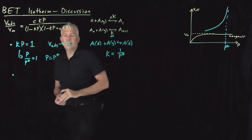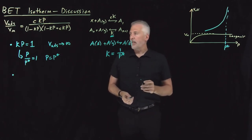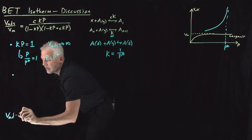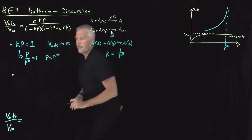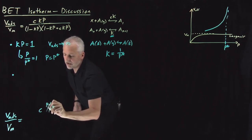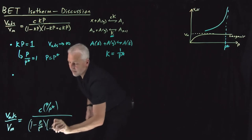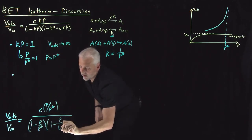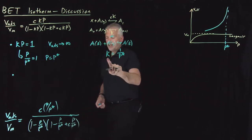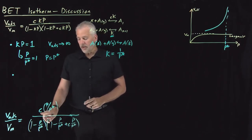We can rewrite this expression in the more conventional form. The adsorbed volume relative to the monolayer volume can be written as C times (P/P*) divided by [1 − (P/P*)] times [1 − (P/P*) + C·(P/P*)]. This removes the K constants from the expression, so the adsorbed volume is expressed purely as a function of pressure, vapor pressure P*, and the BET constant C.